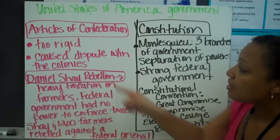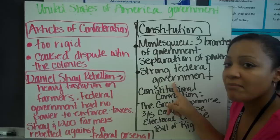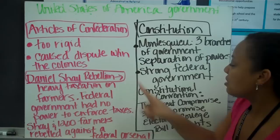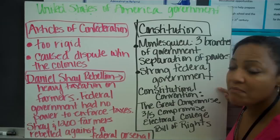We go from having a strong state-powered government to having a strong federal government, which we use today. If the federal government makes a law, all 50 states have to follow it. With the Articles of Confederation, that would not have been the case — each of the 13 colonies or states had their own different laws.